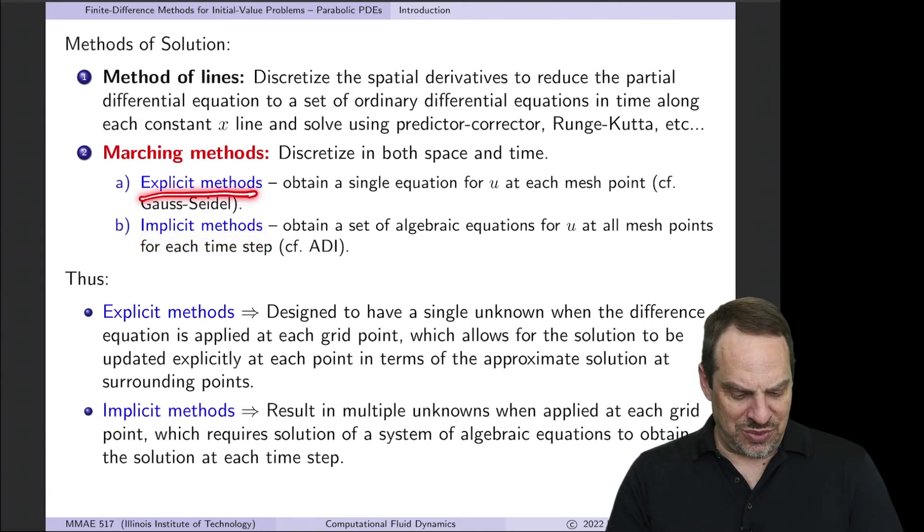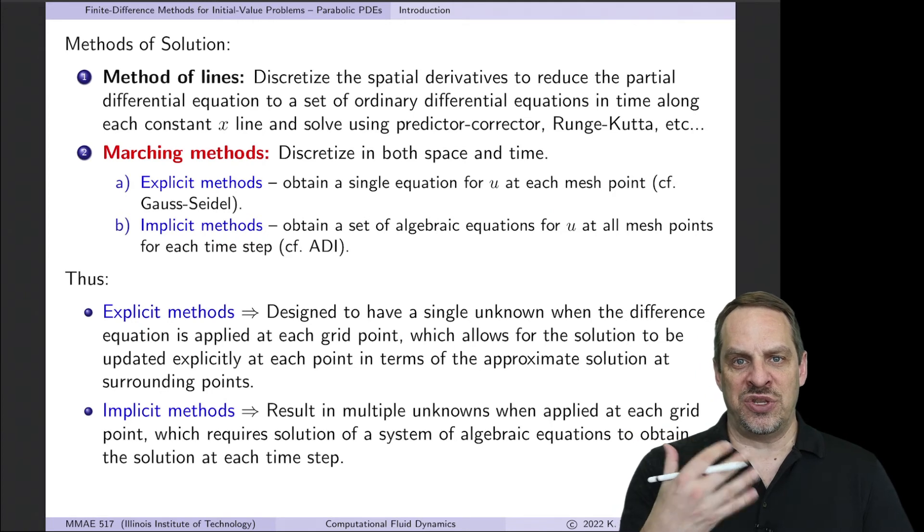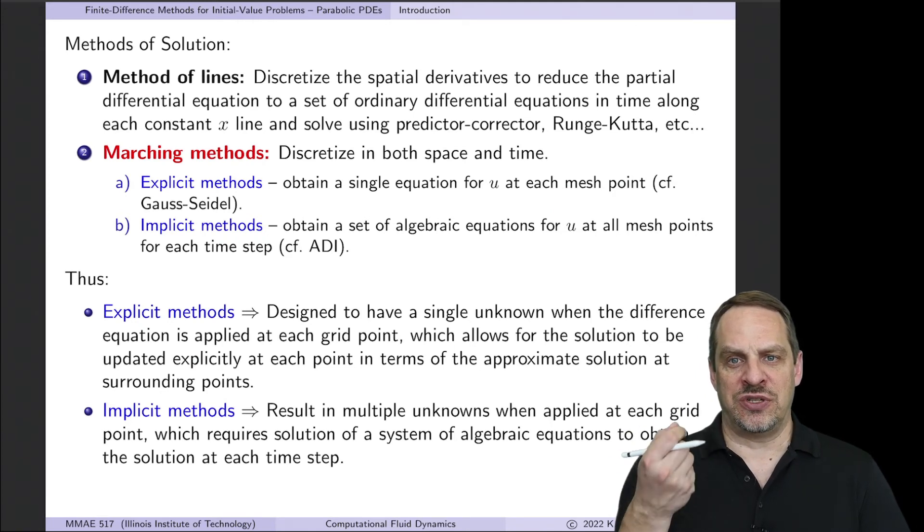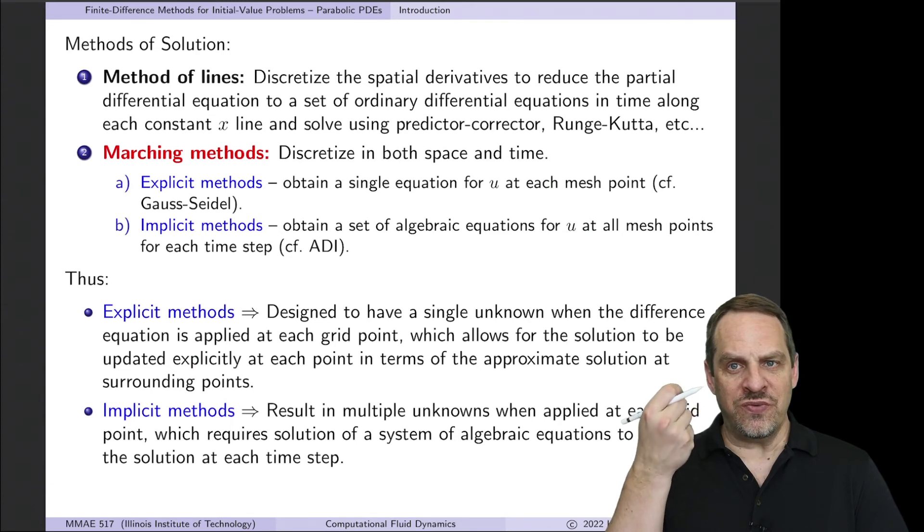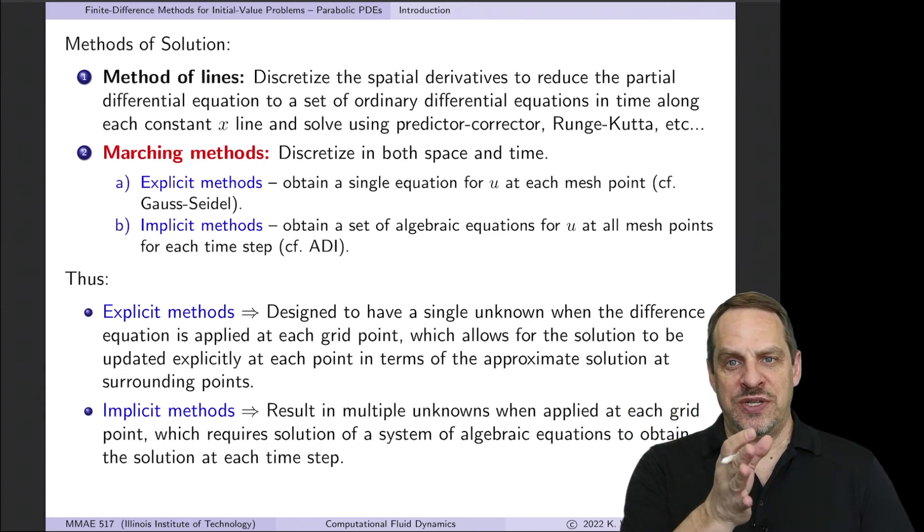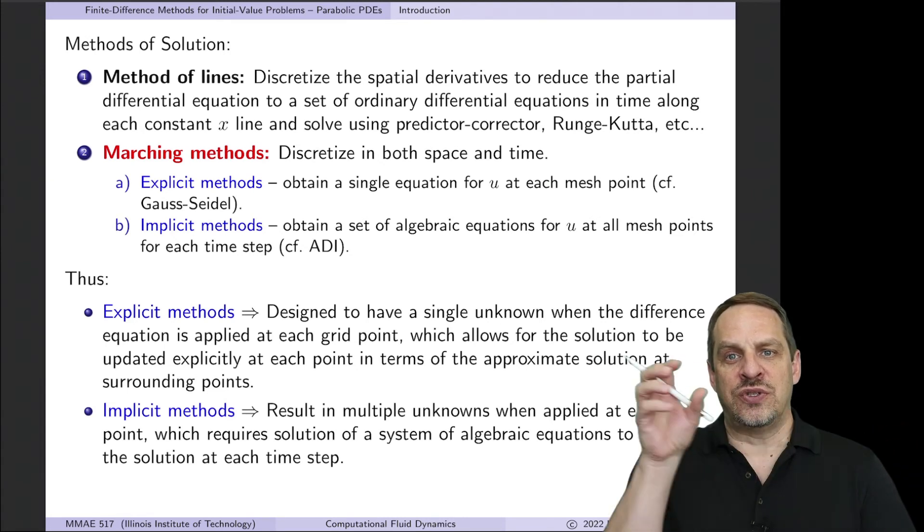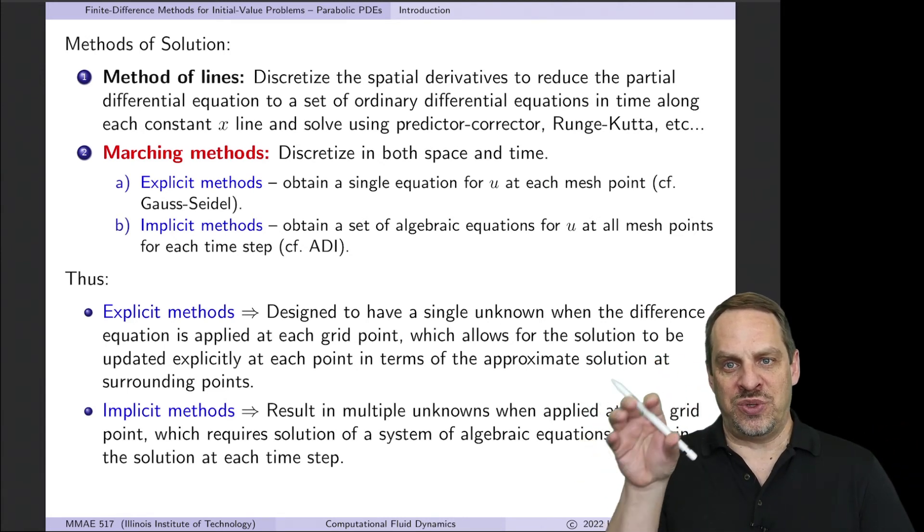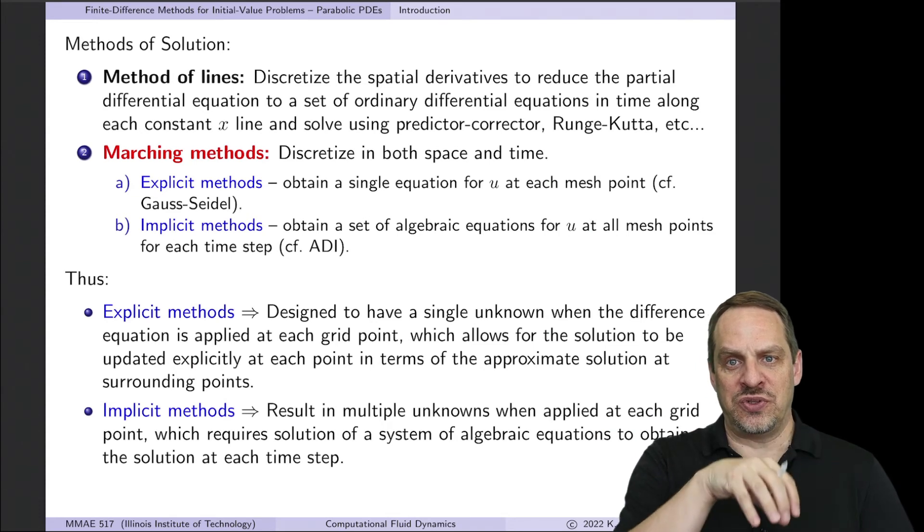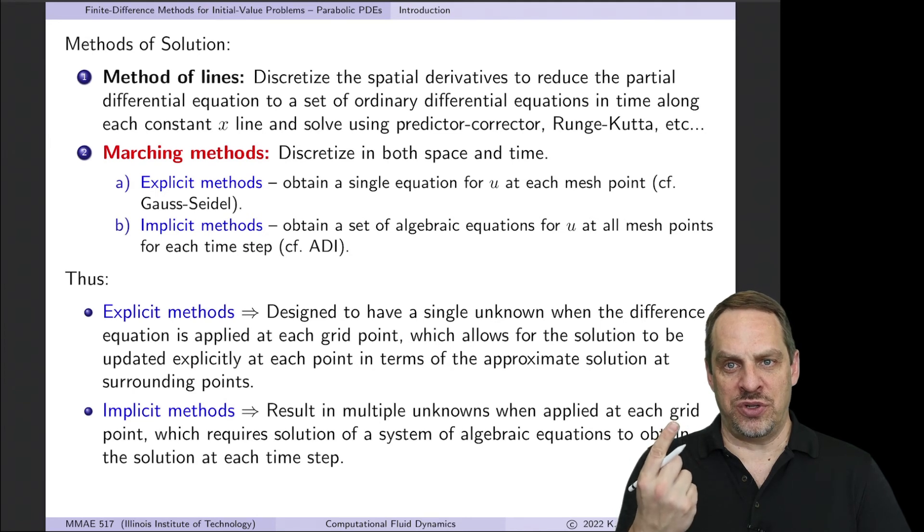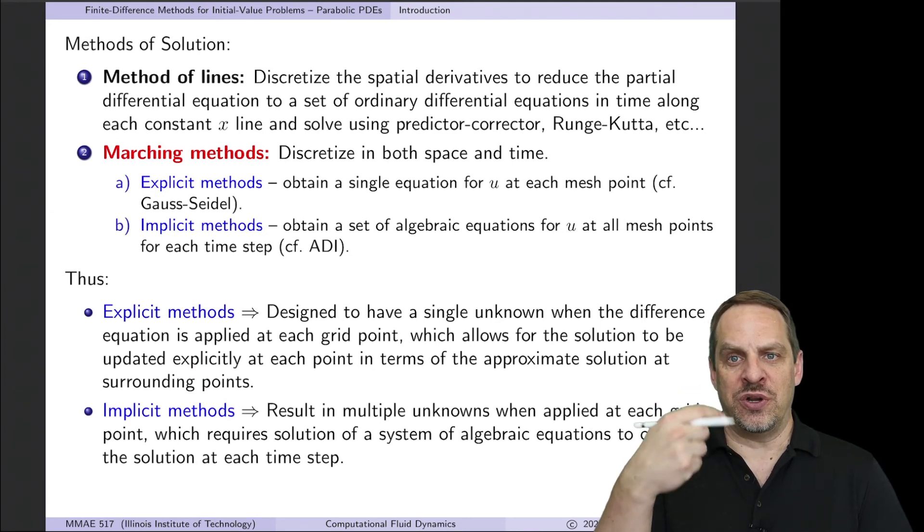The idea behind an explicit method is that you have a single equation for your dependent variable at each grid point. So this is kind of like Gauss-Seidel we use to solve elliptic equations. Gauss-Seidel is an explicit expression for the value of u approximated at a particular grid point is equal to a whole bunch of things that we know. So there's only one unknown in the equation, we can solve for that in terms of things that we know. So same idea here. We're just going to have one unknown, so we'll have an explicit expression for that one unknown. That'll be the value of u at our current time.